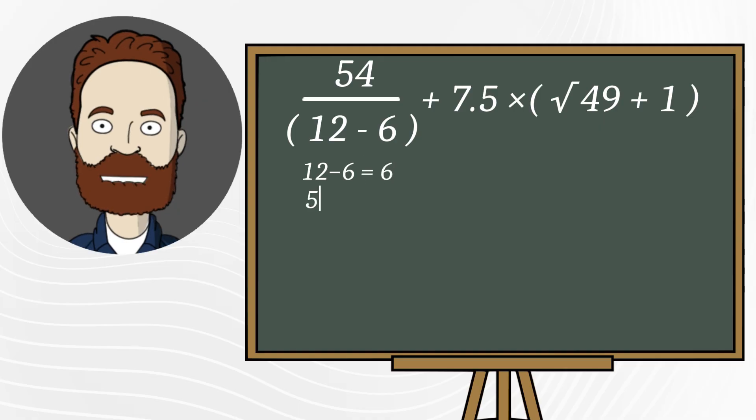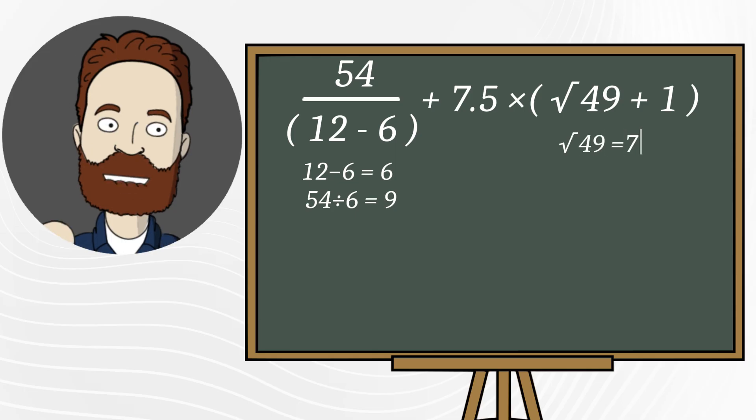Next, 54 divided by 6 equals 9. Now we calculate the square root of 49, which is 7.